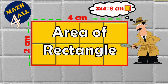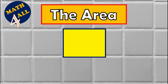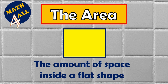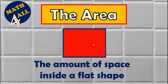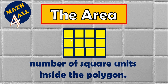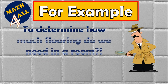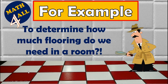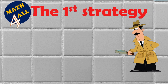We're going to find the area of a rectangle using five different strategies. The area is the amount of space inside a flat shape. As you see in this rectangle, all of this space is called area. It's the number of square units inside a polygon. For example, if you have a room and want to know how much flooring you need, you have to find the area.